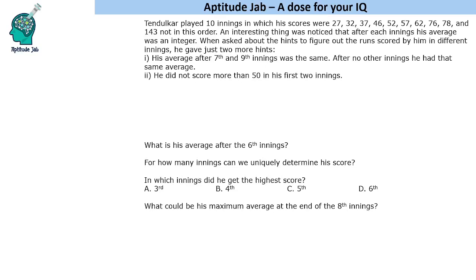Hello everyone. Welcome to Aptitude Jab. This is a set based on a number puzzle. It says that Tendulkar played 10 innings in which his scores were these, not necessarily in this order. An interesting thing was noticed that after each innings his average was an integer.